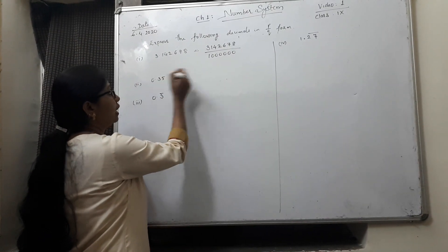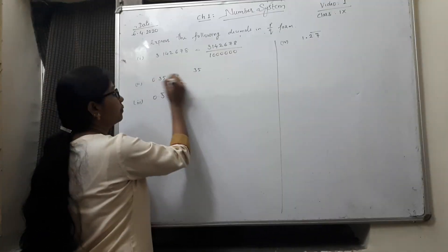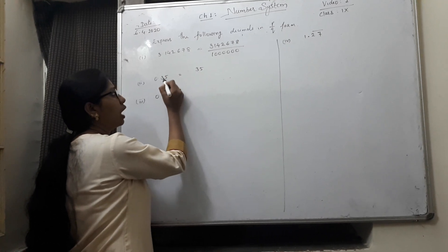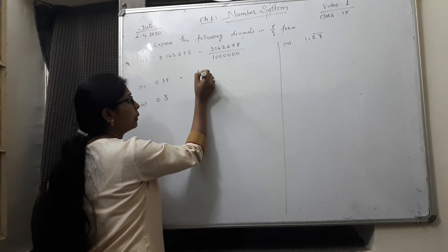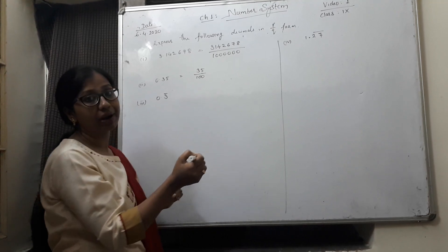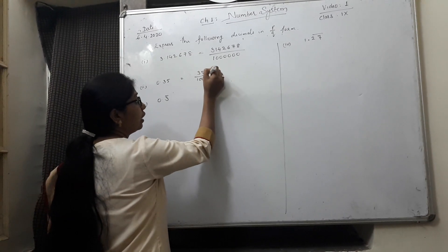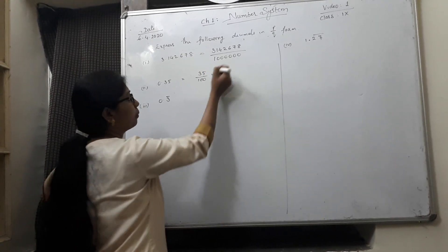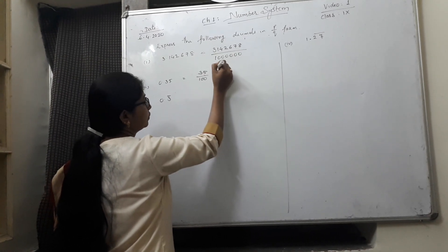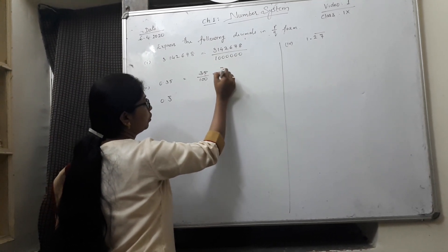For the second one, 0.35. There is two digits, the denominator will be 100. We will multiply and divide by 100. Reduce it into simplest form, 7 by 20.